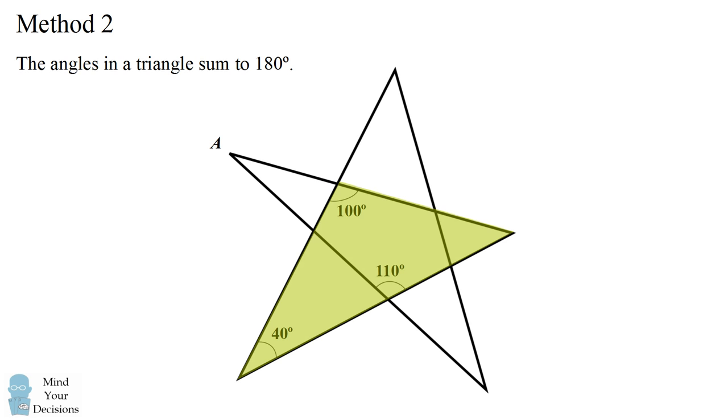First we'll consider the triangle that involves the 40 degree angle and the 100 degree angle. We know that all three angles add up to 180 degrees. The third angle therefore will be 180 minus 100 minus 40. This angle is equal to 40 degrees.